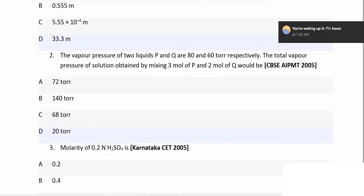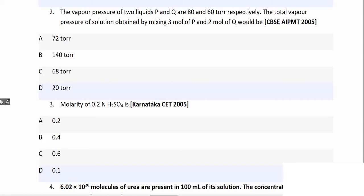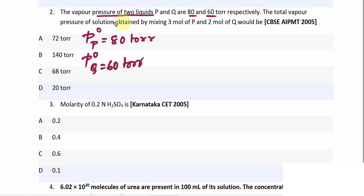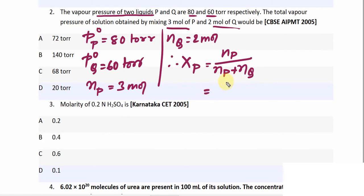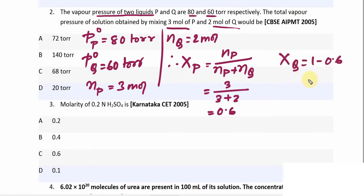Next question: vapor pressure of two liquids P and Q — pure vapor pressure P⁰ of P is 80 torr and P⁰ of Q is 60 torr. We mix 3 moles of P and 2 moles of Q. Mole fraction of P = 3/(3+2) = 0.6, and mole fraction of Q = 1 − 0.6 = 0.4.